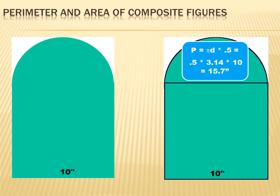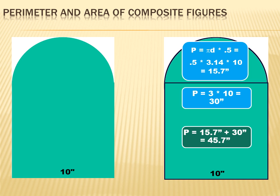Let's figure that out. The perimeter of the semicircle is one half pi d, or one half times 3.14 times 10, which equals 15.7 inches. The perimeter of three sides of the square is 3 times 10 inches, or 30 inches. And the perimeter of the entire shape, the entire composite figure, is 15.7 plus 30 inches equals 45.7 inches.